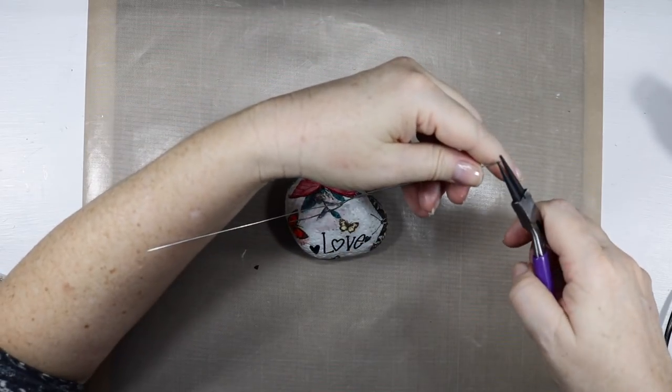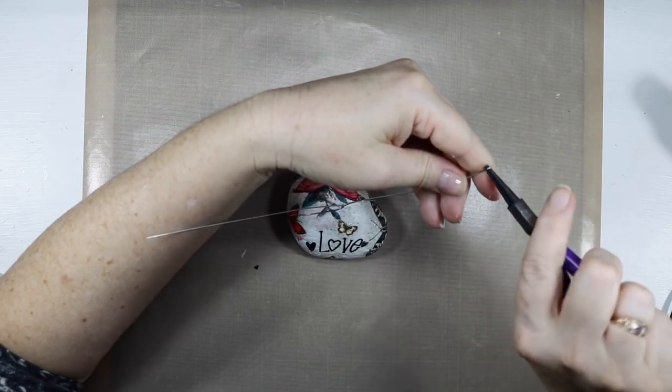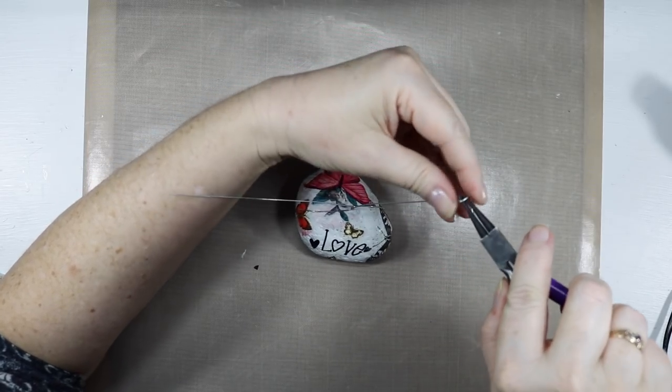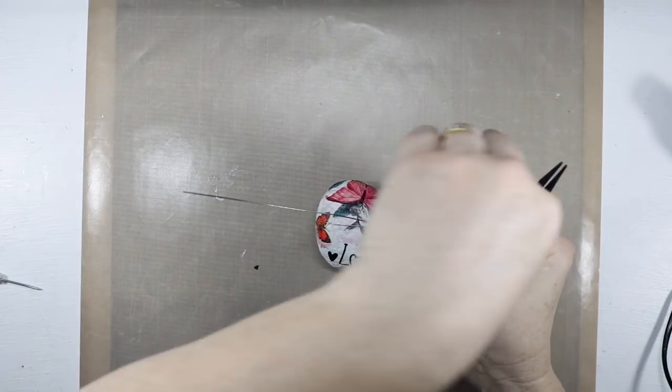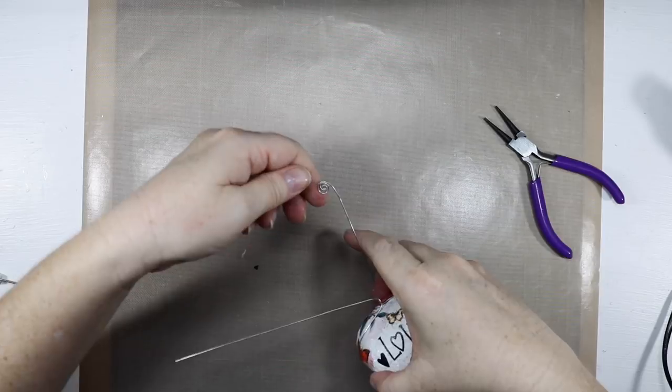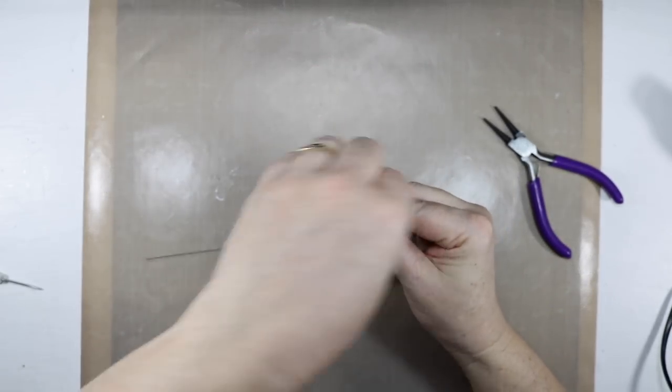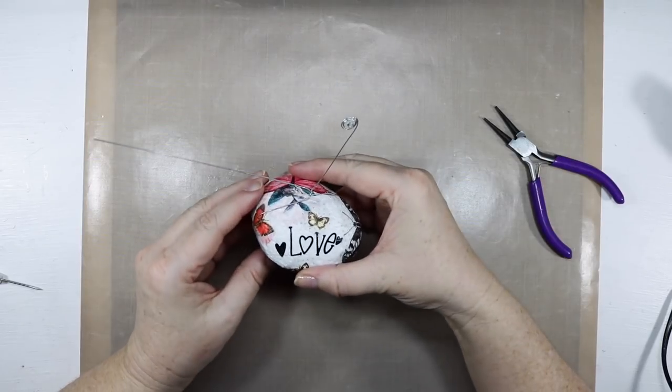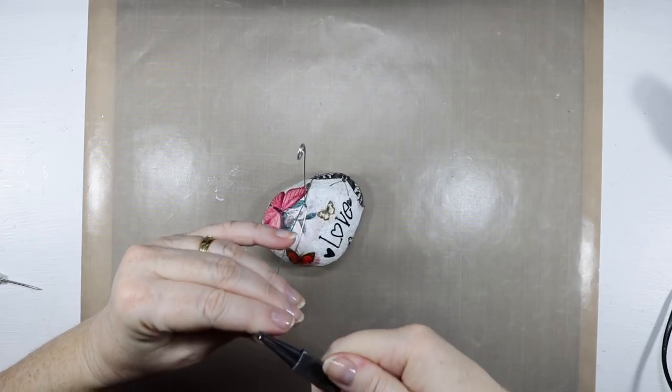Now with my round nose pliers what I'm going to do is I'm going to start to roll the end of the wire. So once I've started the roll I can take that off and then what I can do is with my fingers I will just put the wire between my thumb and index finger and then I can start to roll the wire. So essentially at the end it'll look like a round paper clip on the end of my wire and I'll just repeat the process on the other side here.